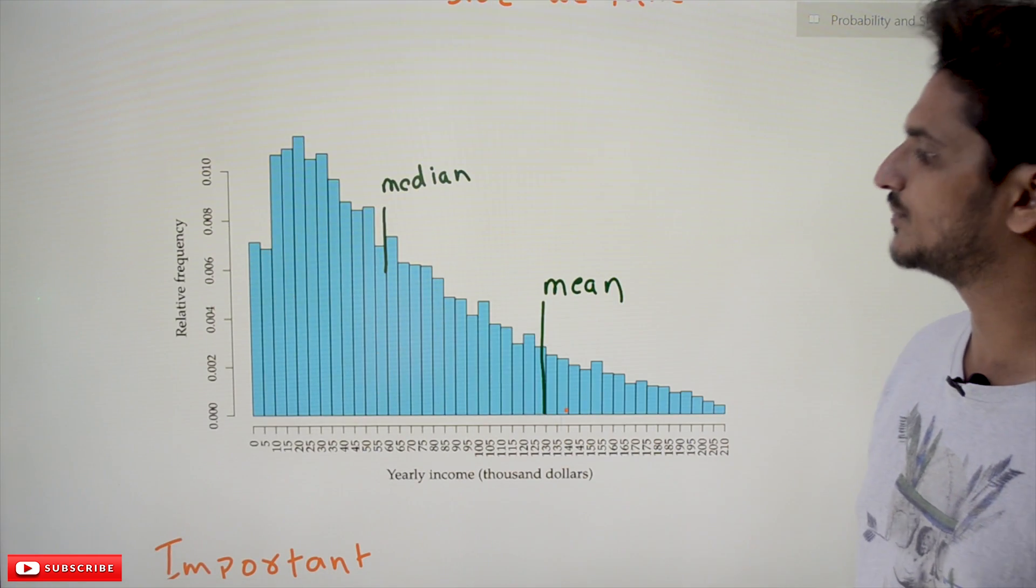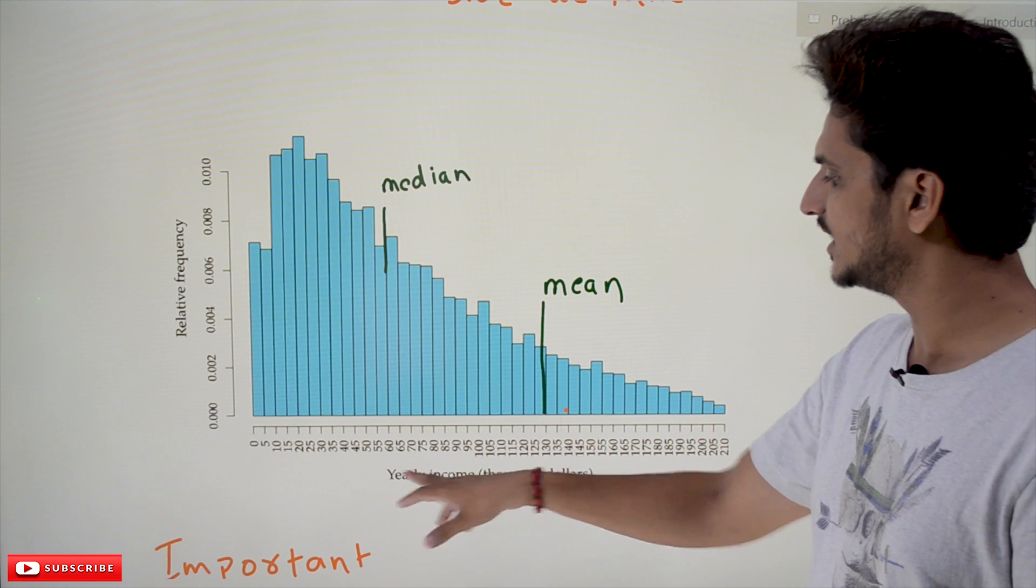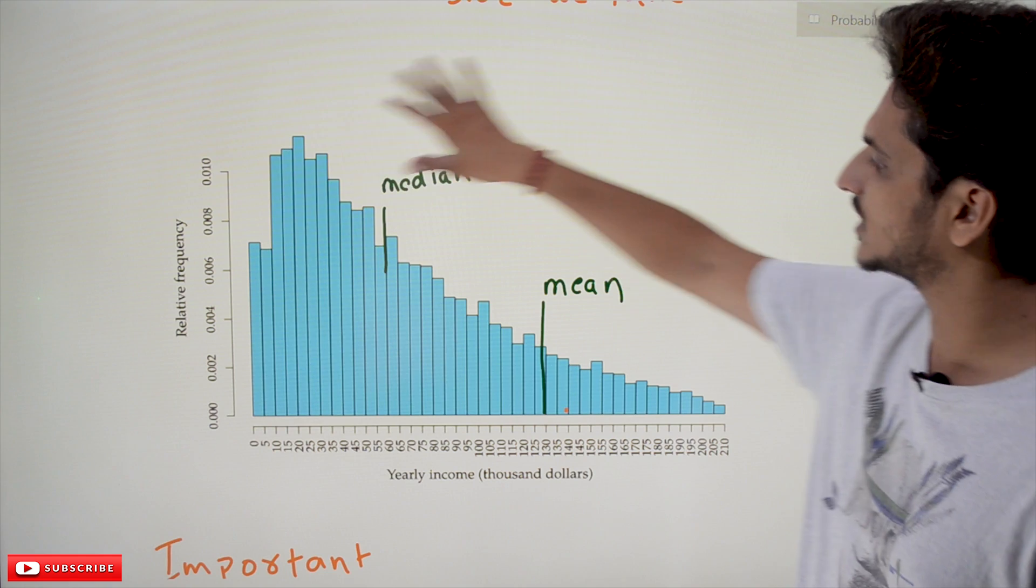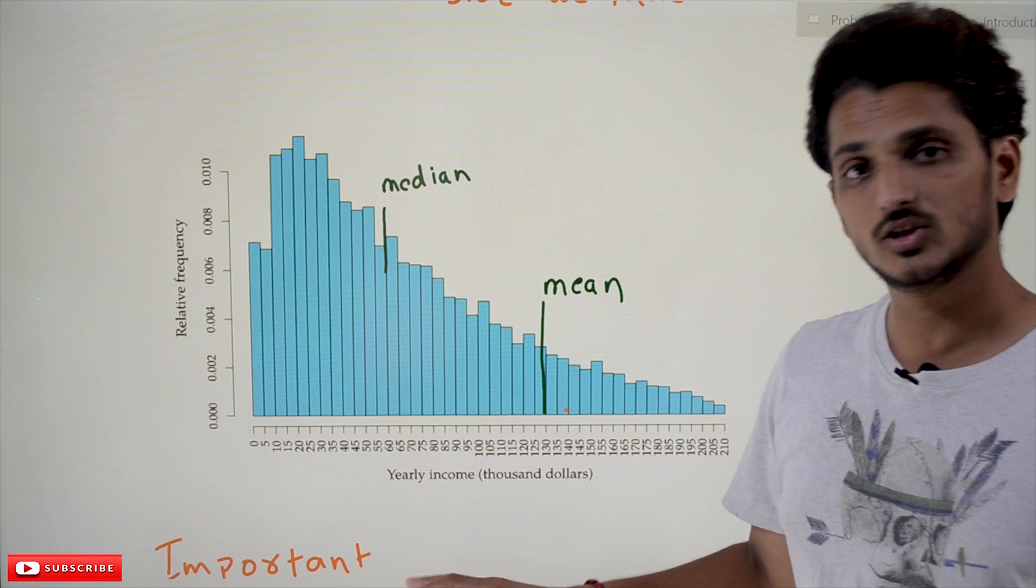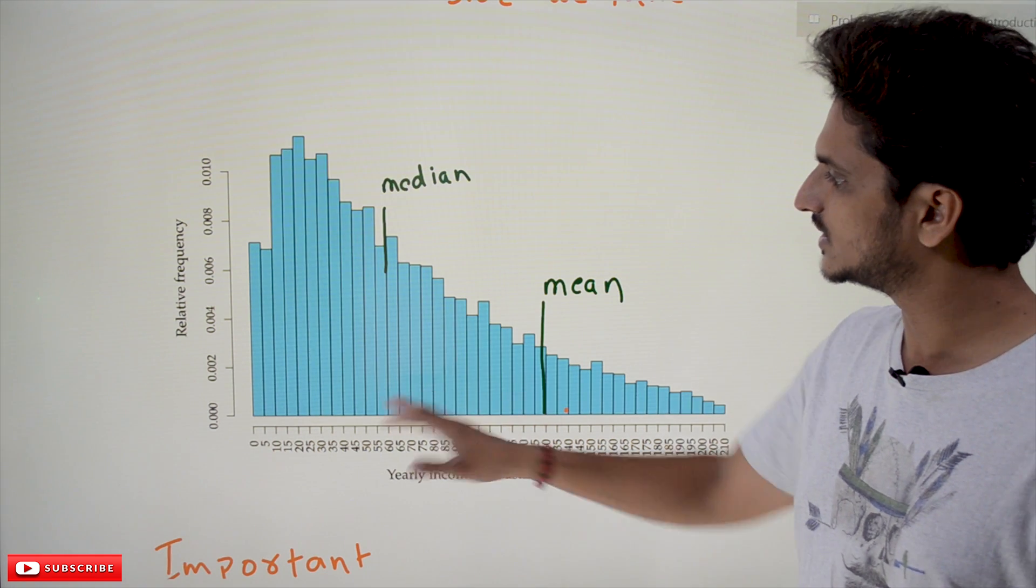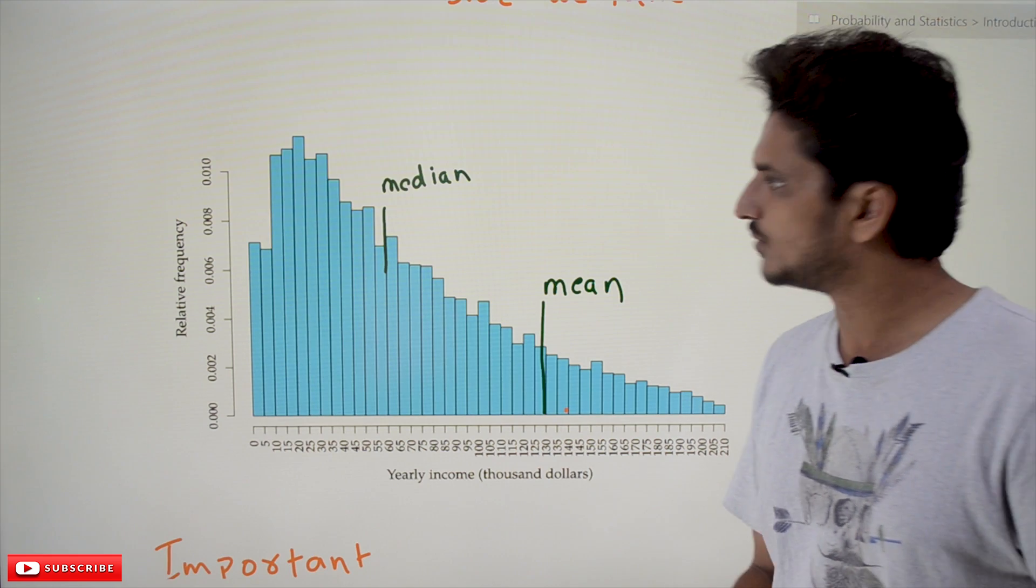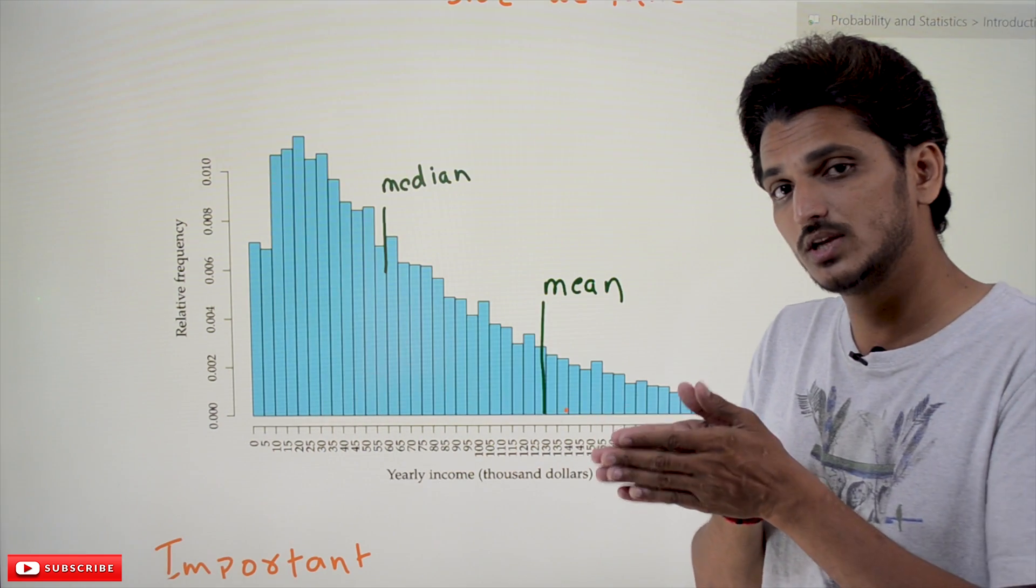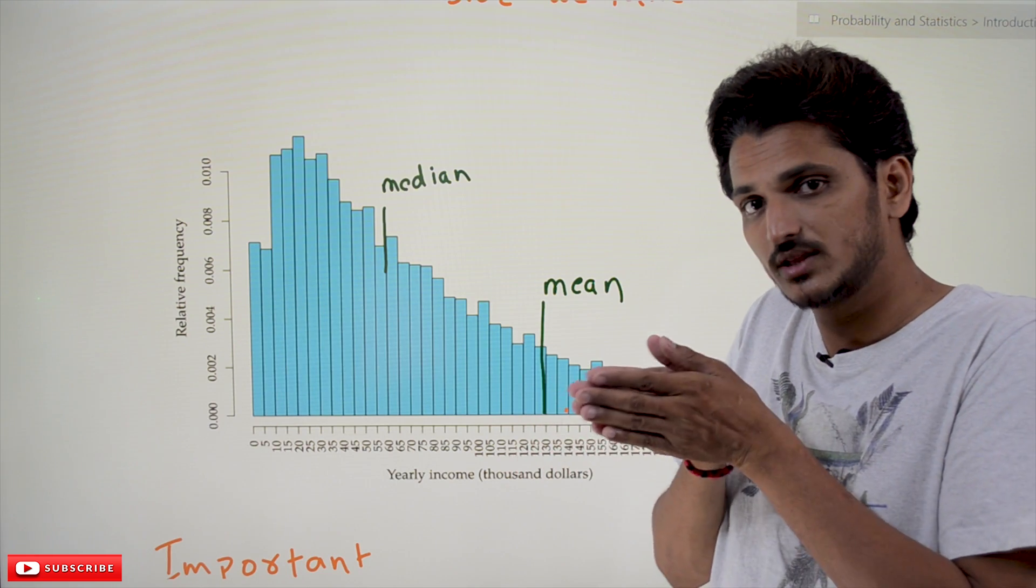Let's try to understand with an example. This is the example which we considered: yearly income of a population and the frequencies are provided. Assume that these are thousands of population. We have taken this dataset. Most of the population comes here. So on thousands of population, if you're taking this dataset, you have to take the central tendency.